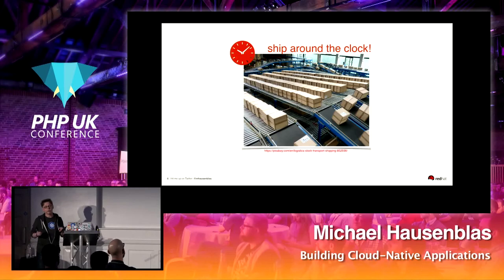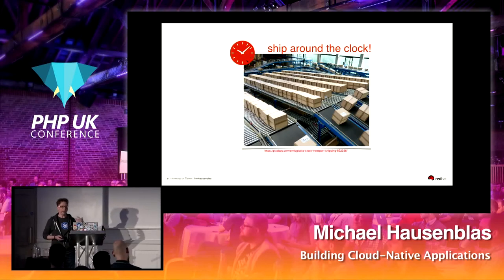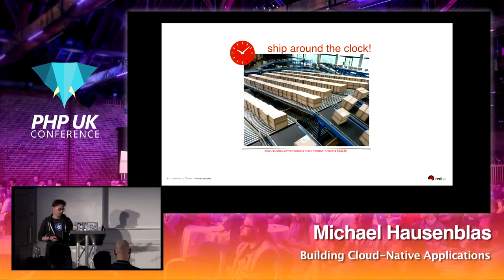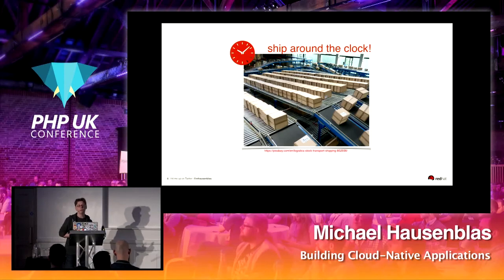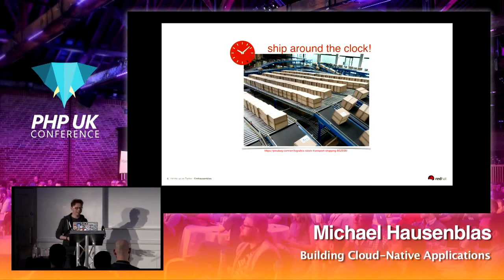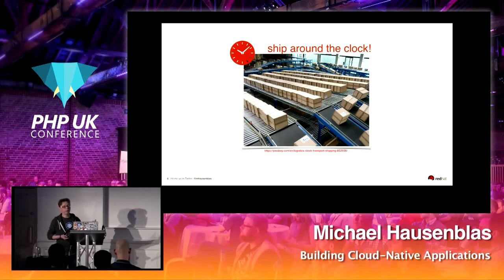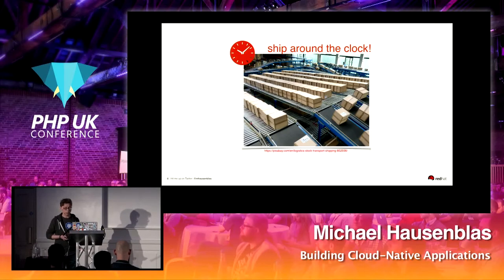Related to that is shipping around the clock. The old traditional way of throwing things over the fence — rolling something out twice a year — turns into many small batches, small feature updates. If you reload your Facebook or LinkedIn, pretty much every time you have a new version. Compare that with once a year. The tendency is really to ship around the clock; whenever there's a new version available, you potentially want to ship it. The internet makes it possible to actually distribute the software.